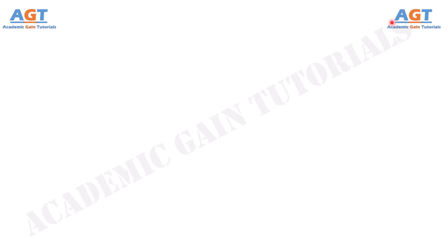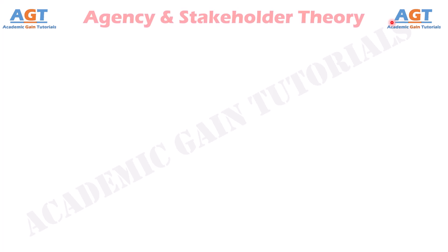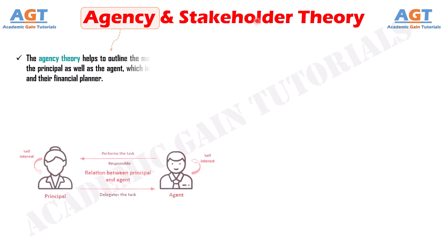Welcome to Academic Gain Tutorials. In this video, we will look into the differences between agency theory and stakeholder theory. The agency theory helps to outline the main interests of both the principal as well as the agent, which includes an individual and their financial planner.